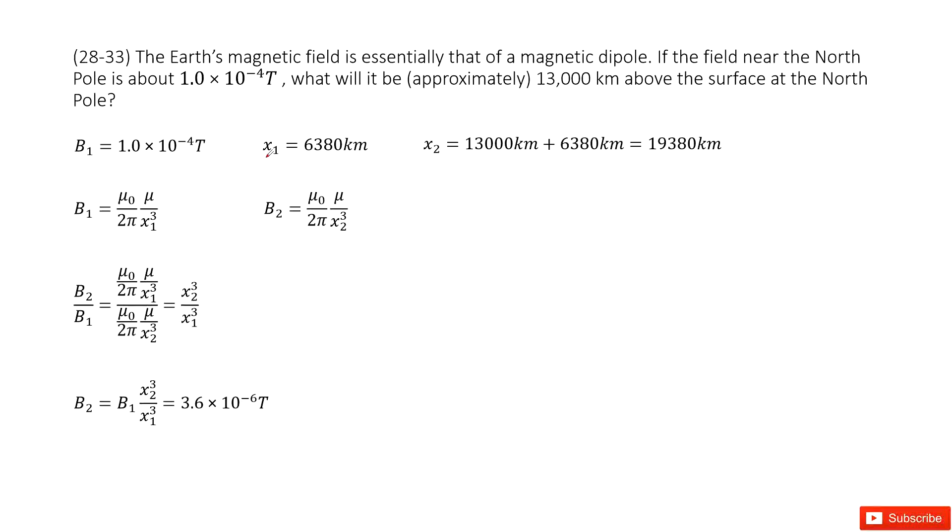And there we can see, in first cases, the position from the dipole is x1. The x1 we can consider the radius of the Earth because it says the position is just at the north pole.